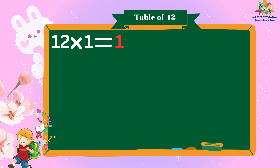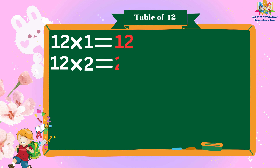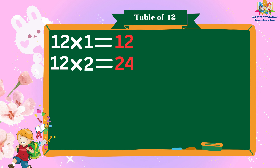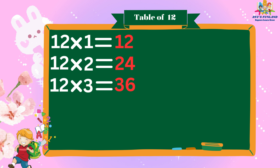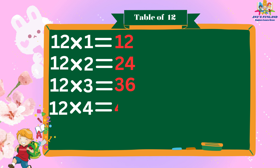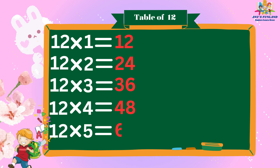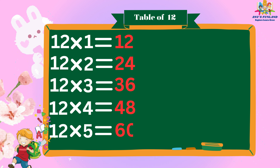Twelve ones are twelve. Twelve twos are twenty-four. Twelve threes are thirty-six. Twelve fours are forty-eight. Twelve fives are sixty.